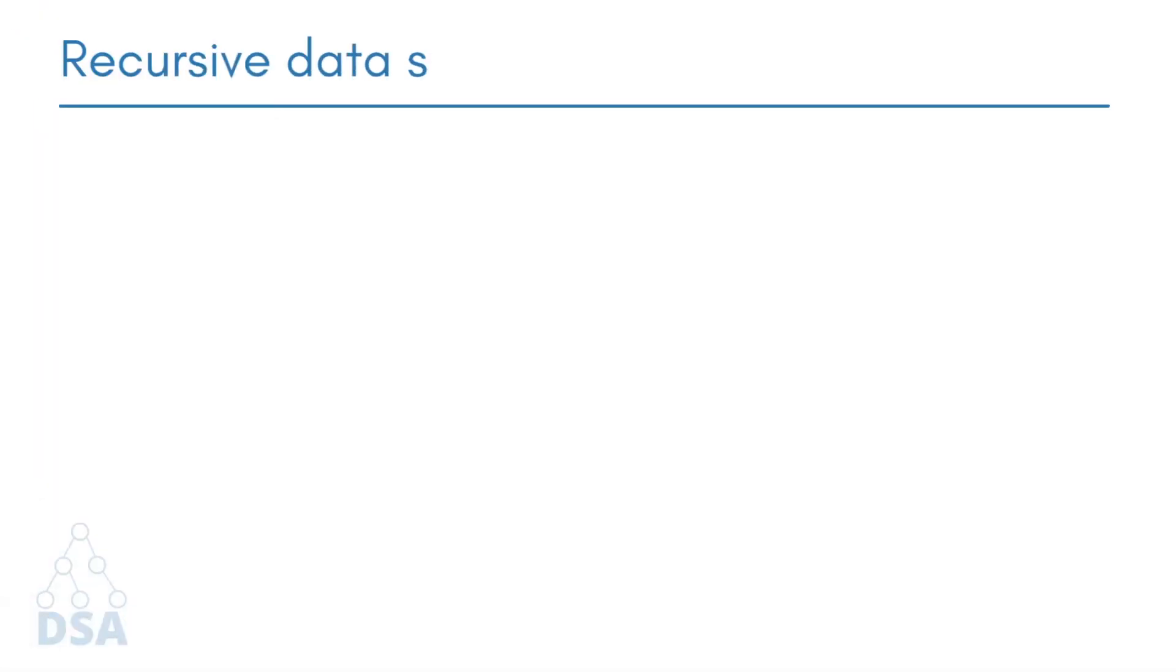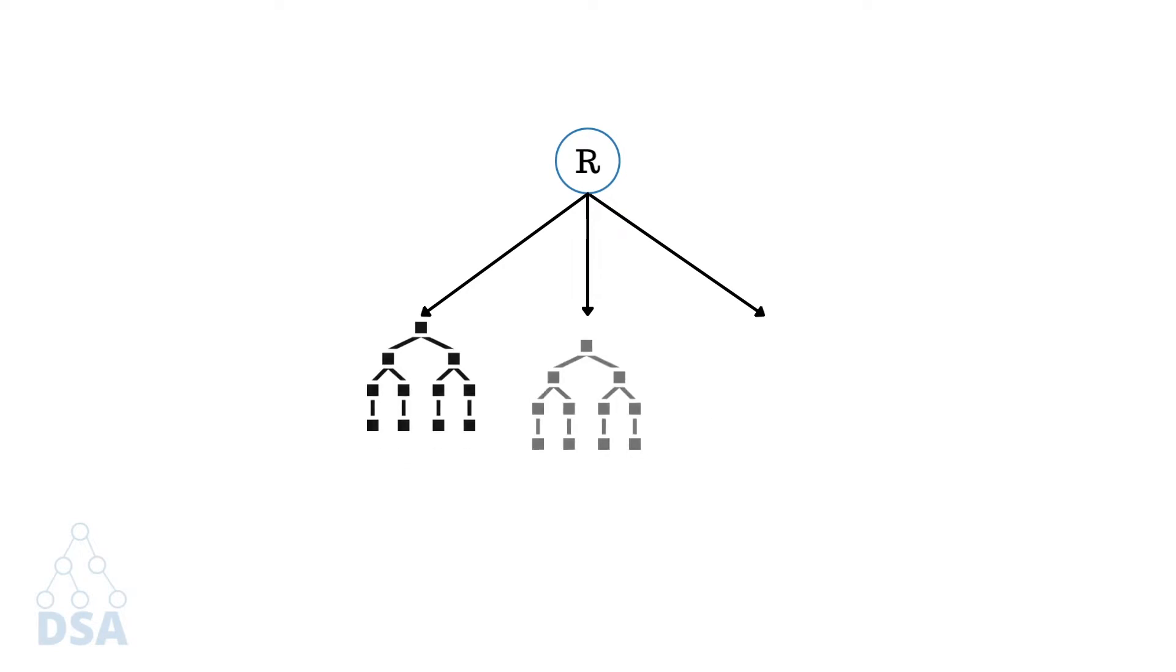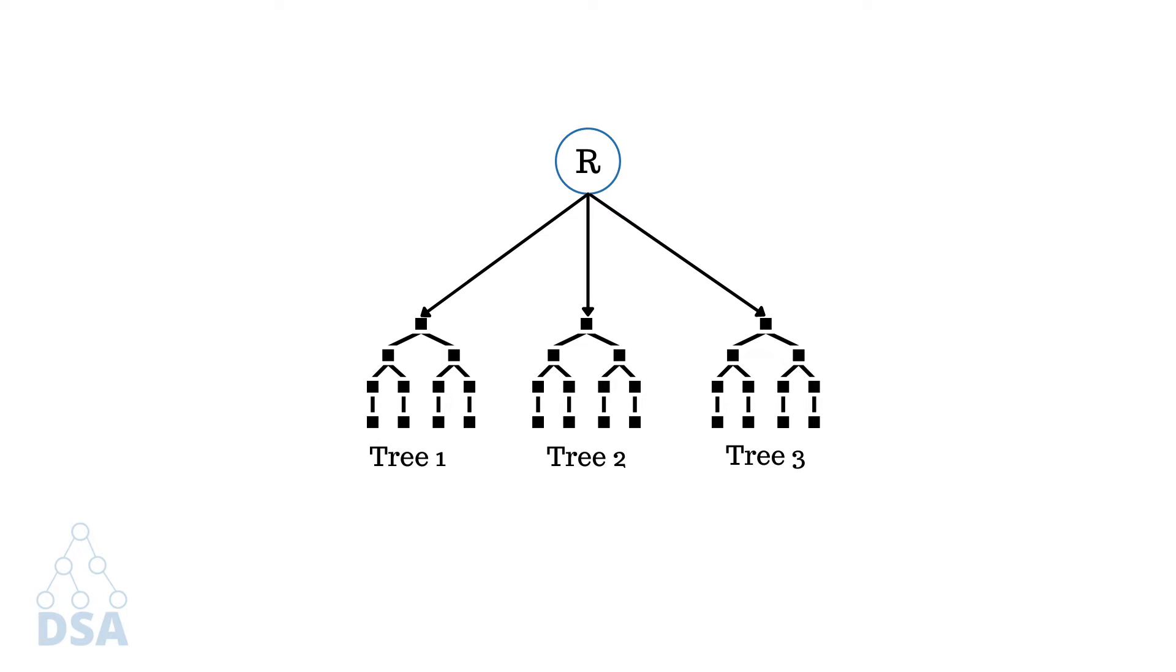A tree is a recursive data structure because each node has a reference to its other subtrees. The root node of the tree contains a link to all the roots of its subtrees. As you can see here, tree 1, tree 2, and tree 3 are subtrees.